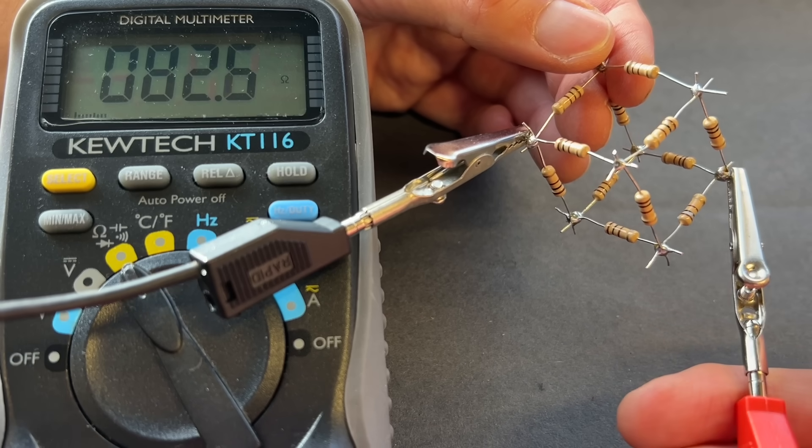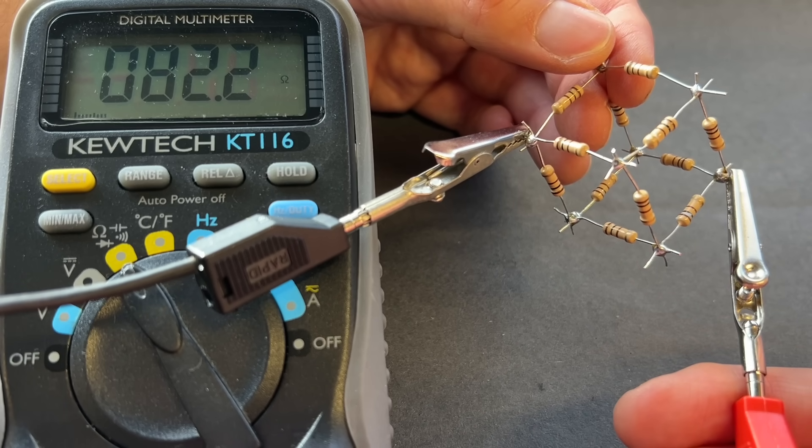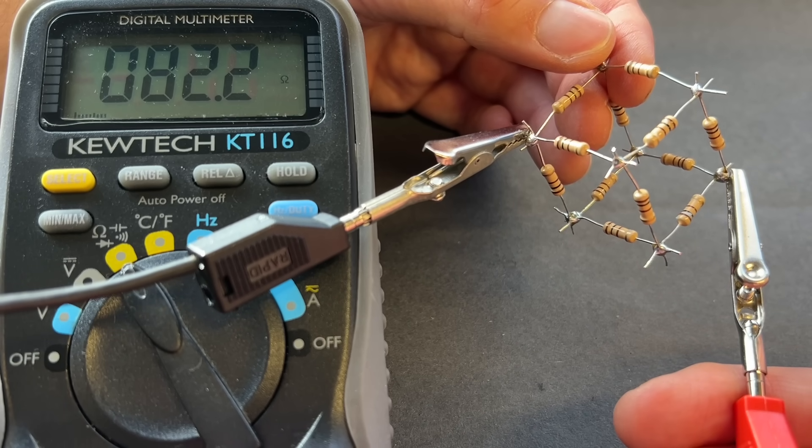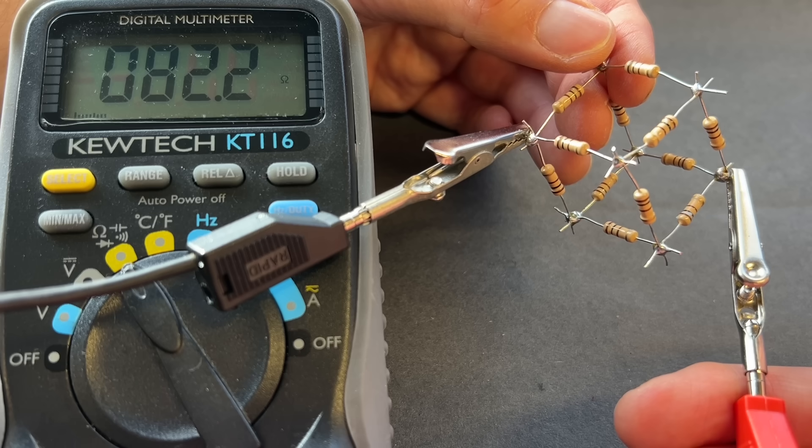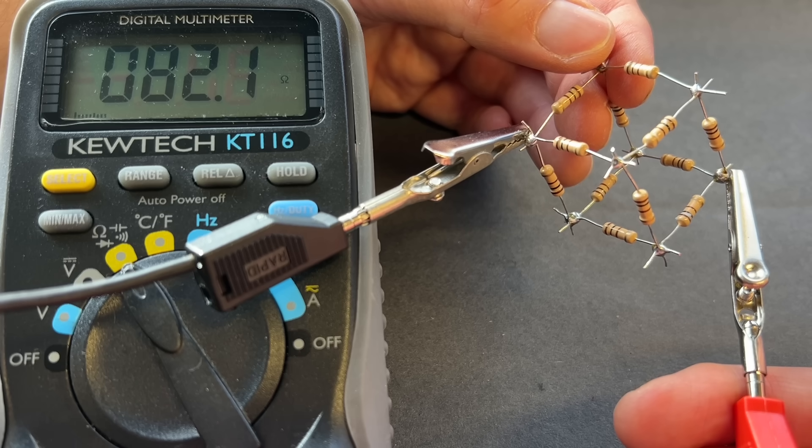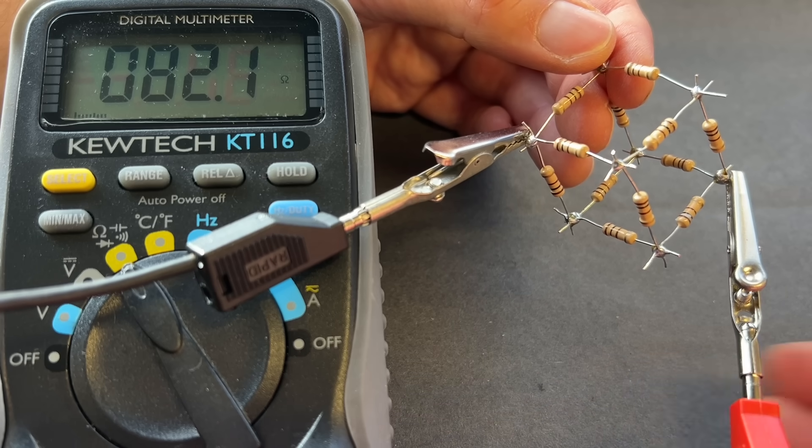And what do I actually measure? After we've let the resistance meter settle down, it comes in at about 82.2 or 82.1 ohms. So, very good agreement.